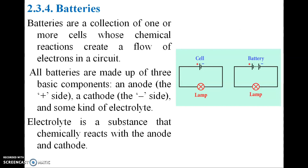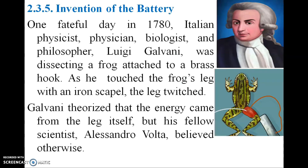Batteries are a collection of one or more cells whose chemical reactions create a flow of electrons in a circuit. All batteries are made up of three basic components: an anode, a cathode, and an electrolyte. The electrolyte is a substance that chemically reacts with both the anode and the cathode.